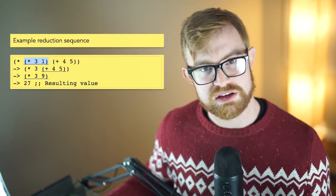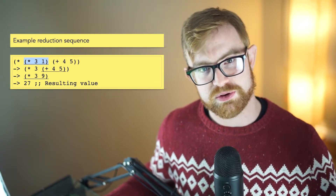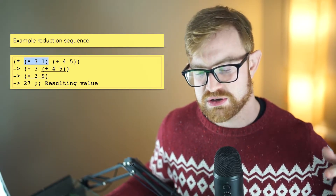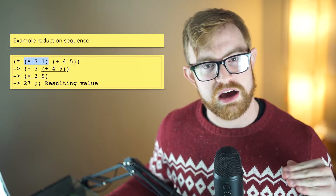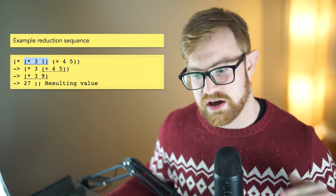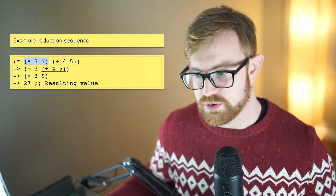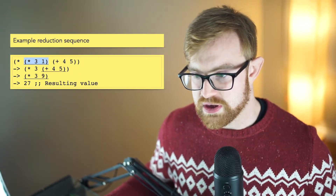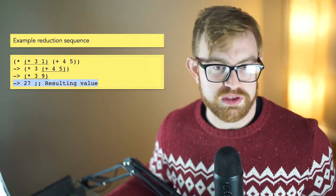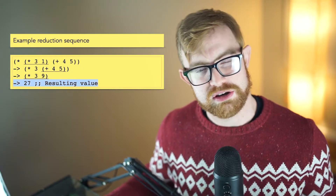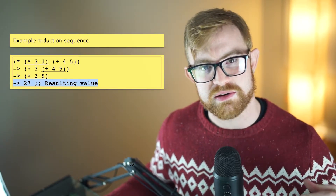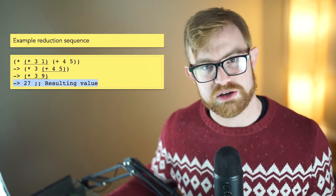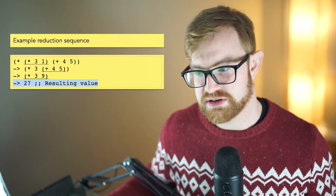If an expression has multiple subcomputations, we do those each one at a time by identifying the first one to do. We always end up with a value. A reduction sequence always ends in a value because that's the place where computation stops.